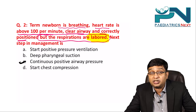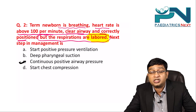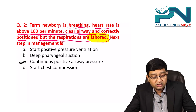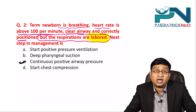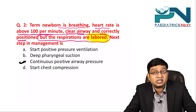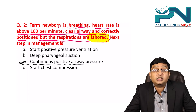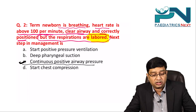Positive pressure ventilation — discussed in the previous question — has three indications: apnea, gasping, or heart rate less than 100. Differential suction is no longer recommended. Chest compression is indicated when heart rate is less than 60, but here the heart rate is more than 100. Therefore, the best answer is continuous positive airway pressure.